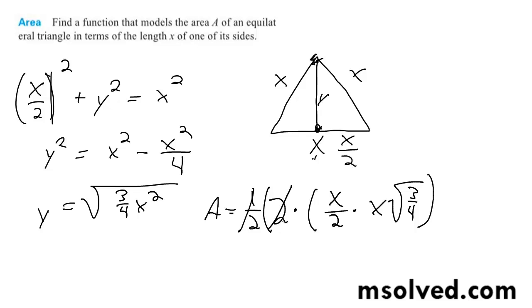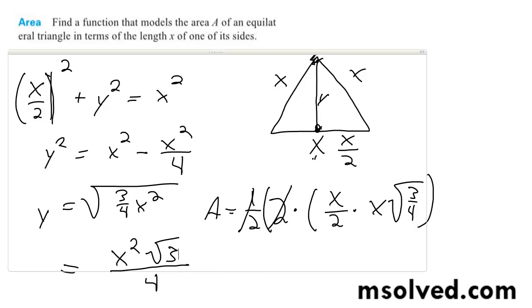So these cancel out, and you're left with x²√3/4. And that's it.